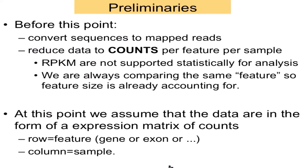Of course, you have started by mapping your reads, and we want to reduce them to counts per feature. Some software reduces things to RPKM or FPKM, but the statistical analysis requires counts, and that's to get an accurate estimate of the standard deviation. You can plug anything in anywhere, but you'll have problems — you won't have the right standard deviation, so your false discovery and non-discovery rates won't be quite right.